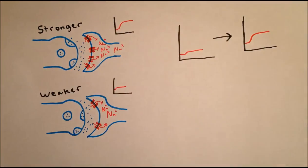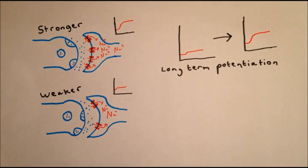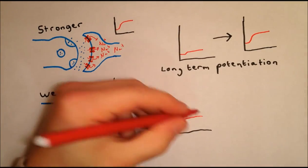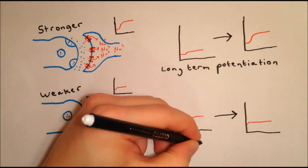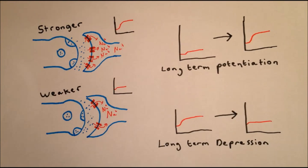Strengthening of a synapse is known as long-term potentiation. The change in potential evoked by the presynaptic neuron will be greater. And the weakening of synaptic strength is known as long-term depression. The change in potential will be smaller. But what determines whether a synapse will undergo LTP or LTD?